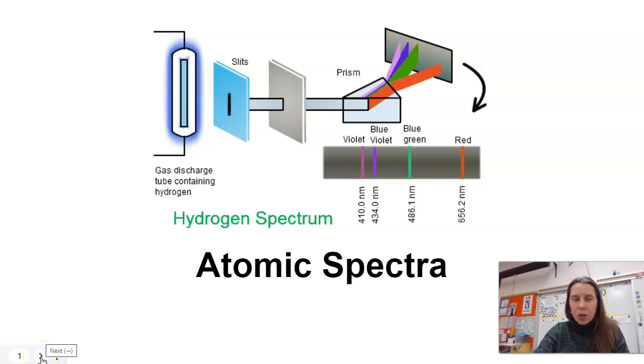Hello, today I'm going to talk to you about atomic spectra. Spectra is just the plural of spectrum. What we're going to look at today is basically the light that is either emitted by or absorbed by atoms, and how you can use that light to identify what it is.